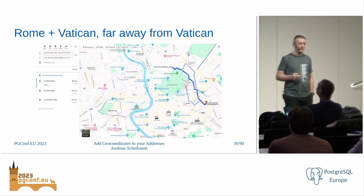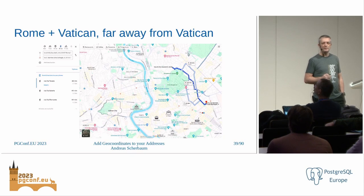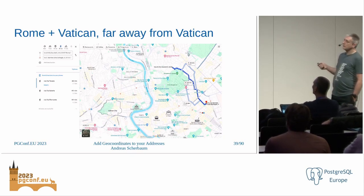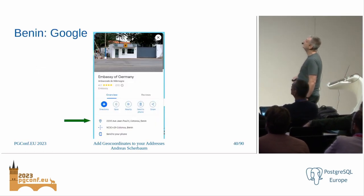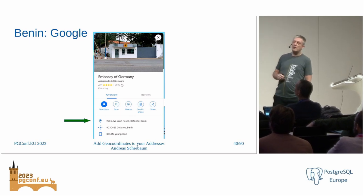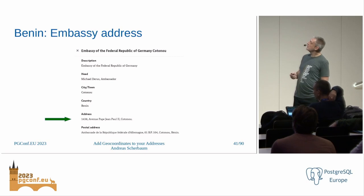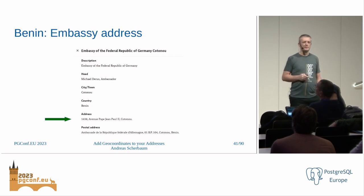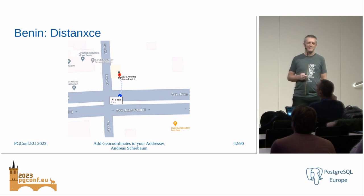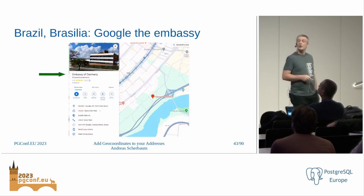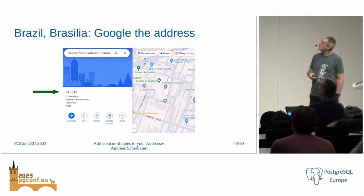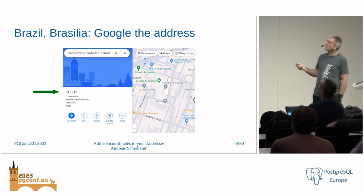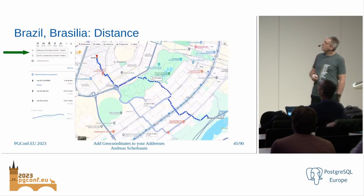Some examples: we have two embassies in Rome — one for Italy, one for the Vatican — and none of them are even close to the Vatican. We're spending money on it. What Google thinks we have as an embassy in Benin and what the foreign office thinks are totally different. Lucky for us, they are close together. This is what Google thinks the German embassy is, and apparently it is. This is where the address from the foreign office website points to — that's literally all I got there.